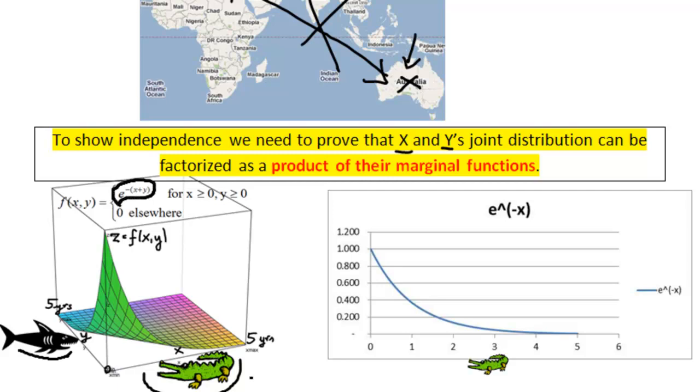So, for instance, the timings to the next fatal croc attack would be distributed like this, i.e. exponentially. And we see that this function has only one single variable. So, we are moving from the 3D, three-dimensional context into a two-dimensional representation.